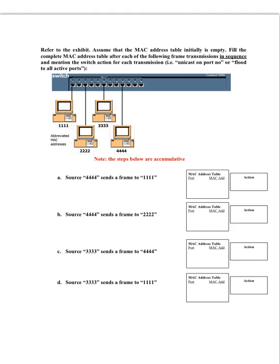This question asks you to fill the MAC table of a switch, assuming you start with a blank MAC table. You are supposed to process the MAC table and specify the action the switch will take as a result of each of four events. The possible actions are either to unicast on a specific port or flood to all active ports.